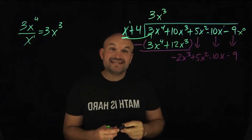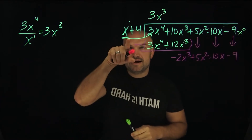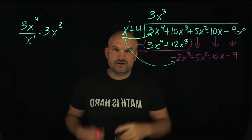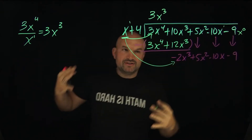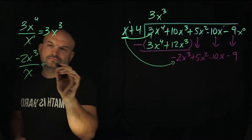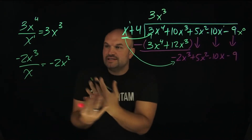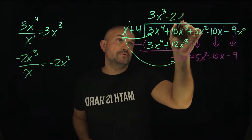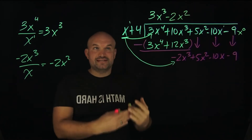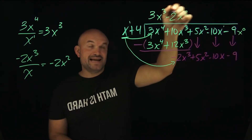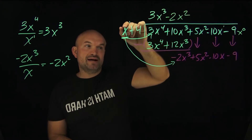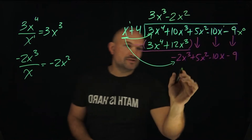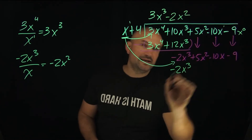Now we do the exact same process again. How many times does x divide into negative 2x cubed? Following the rules of exponents, that gives us negative 2x squared — that's our next term in the quotient. Then we multiply: negative 2x squared times x gives negative 2x cubed, and negative 2x squared times 4 gives negative 8x squared.